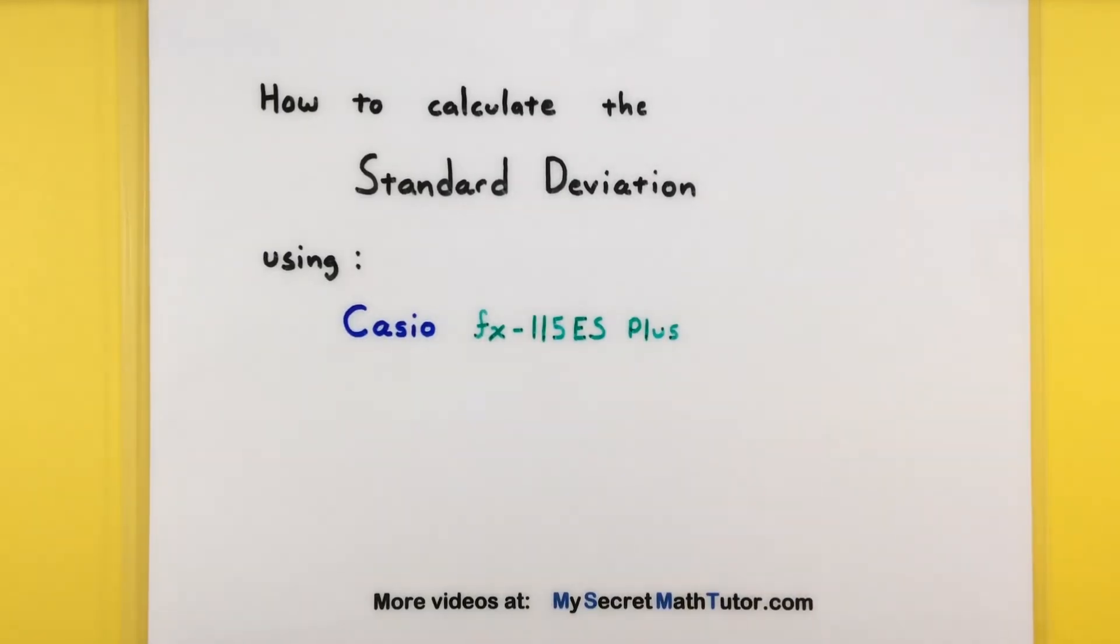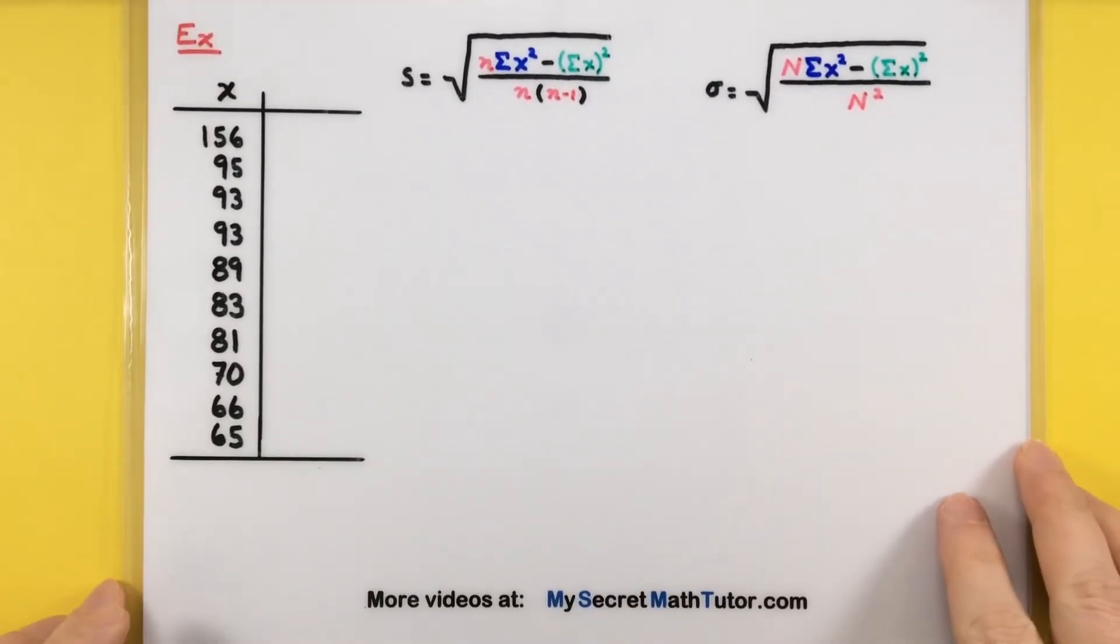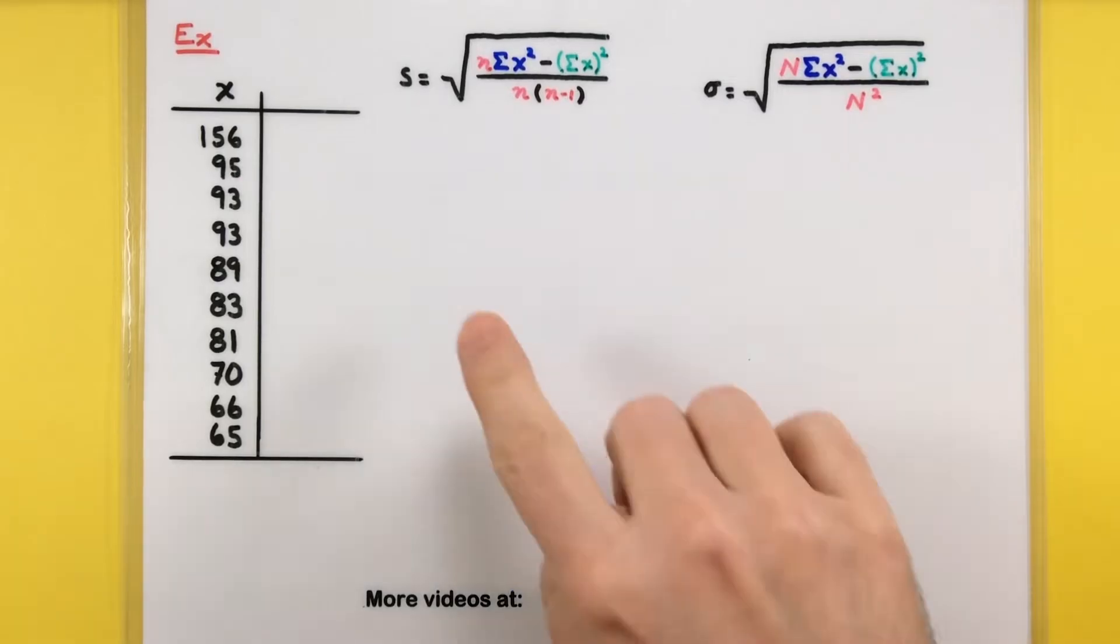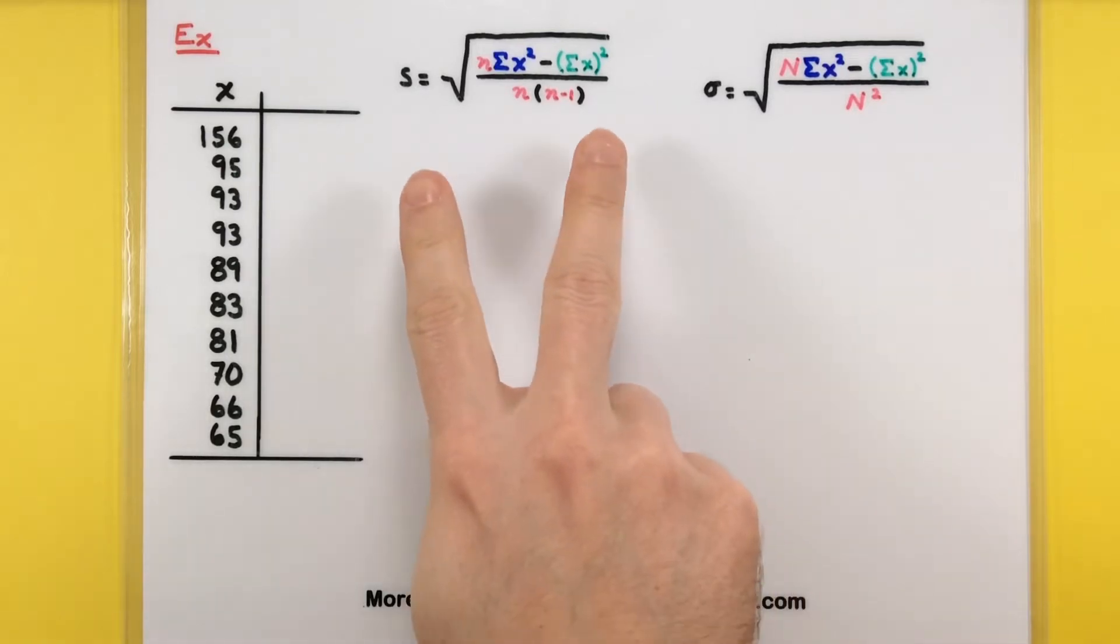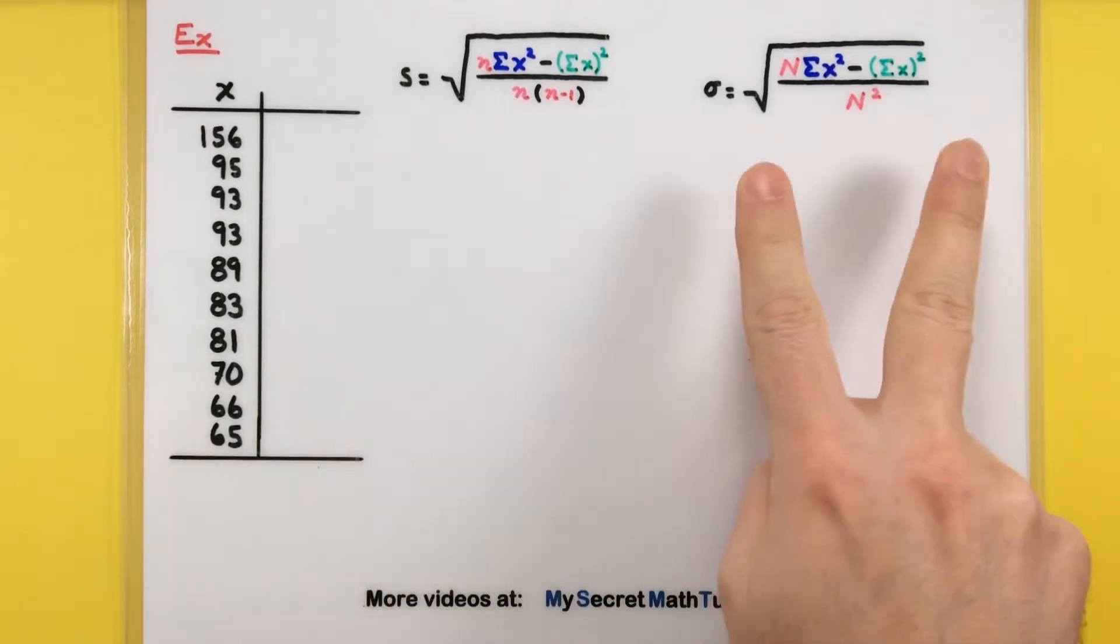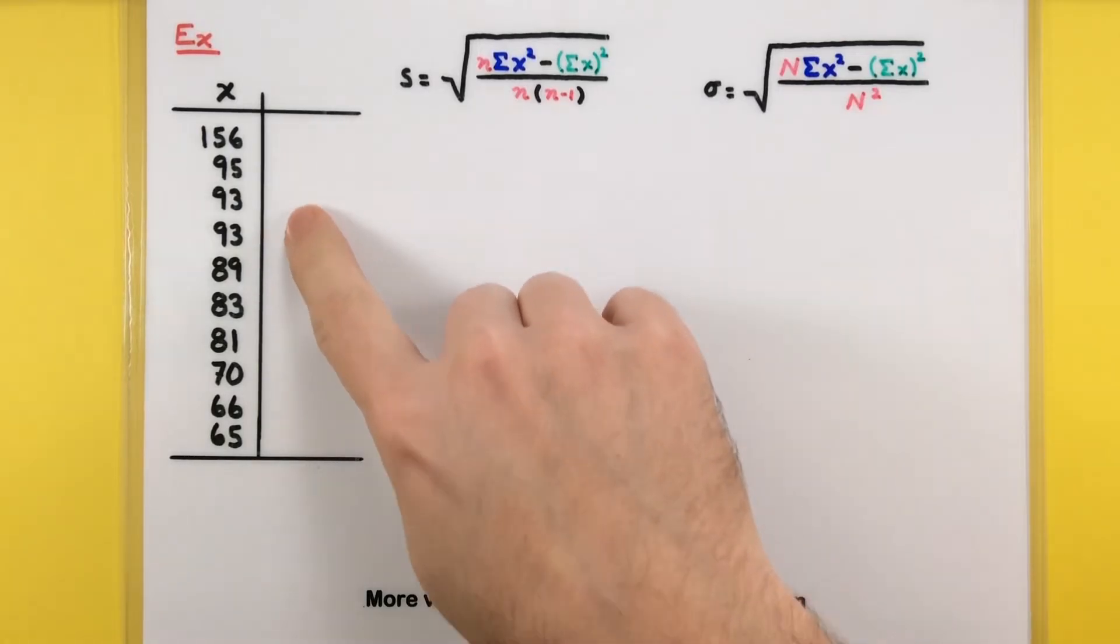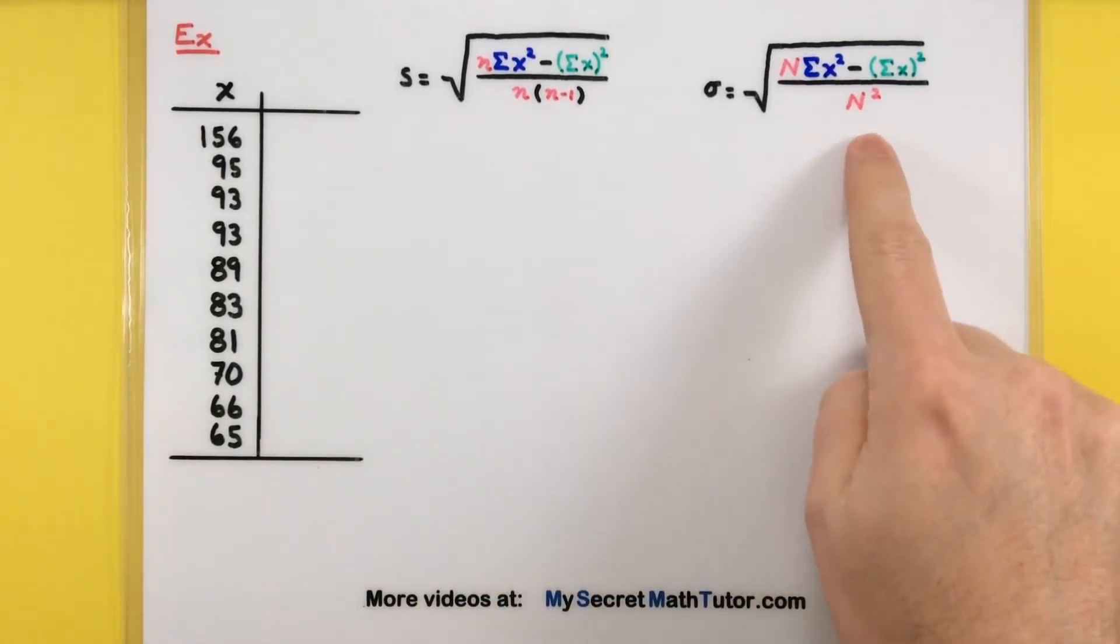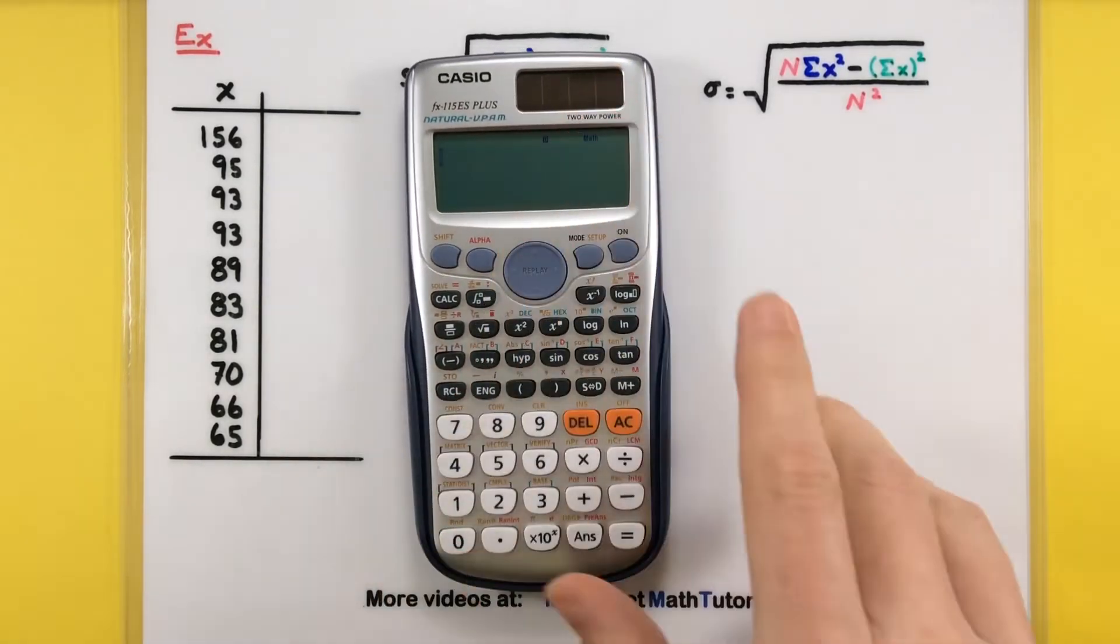So let's move on to that step and get this process going. Here I have 10 different data points, and we want the calculator to calculate the standard deviation. Now remember there's two different types of standard deviation. It could be the standard deviation of a sample, or could be the standard deviation of a population. Fortunately this calculator will do either one, but make sure you know whether your data is from a sample or a population before you get too far. So let's get on to entering in that data.